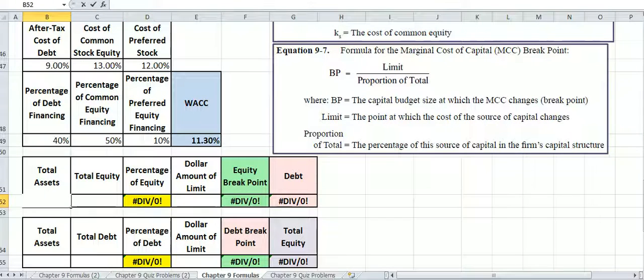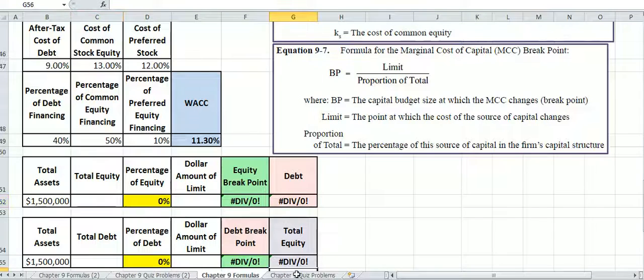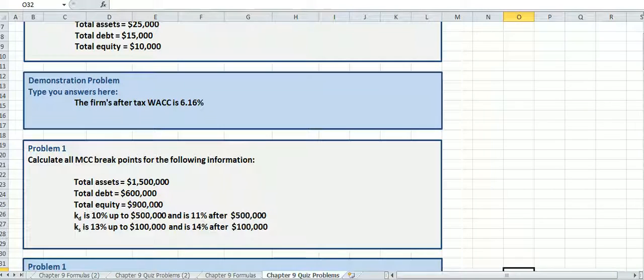so let's go ahead and just put in our total assets right here, which is $1,500,000, in order to get our actual percentages or proportions, $1,500,000. And then total equity is,